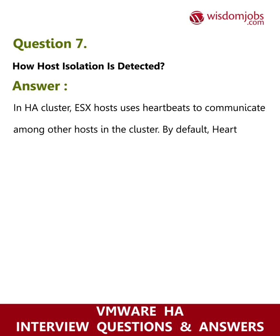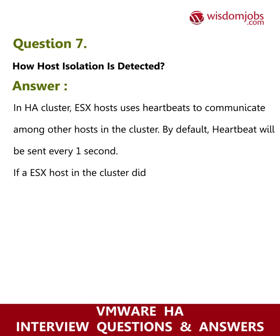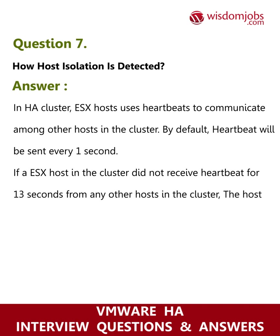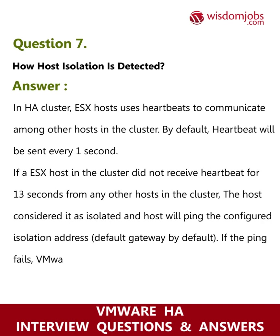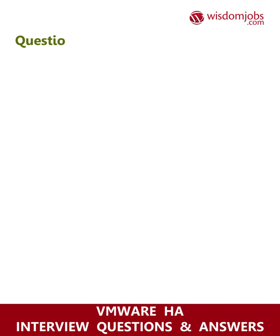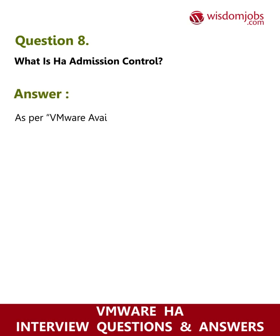Question 7: How is host isolation detected? Answer: In an HA cluster, ESX hosts use heartbeats to communicate among other hosts. By default, a heartbeat is sent every one second. If an ESX host does not receive a heartbeat for 13 seconds from any other host in the cluster, it considers itself isolated and pings the configured isolation address (default gateway by default). If the ping fails, VMware HA will execute the host isolation response.